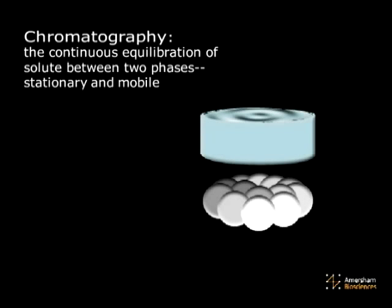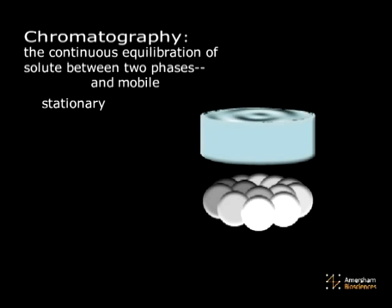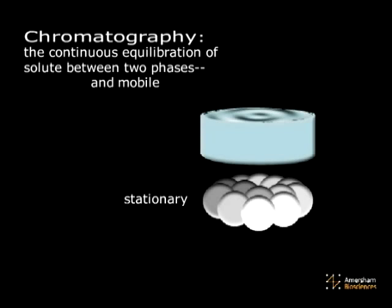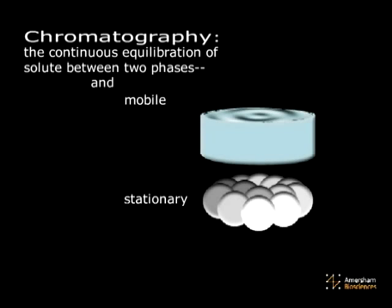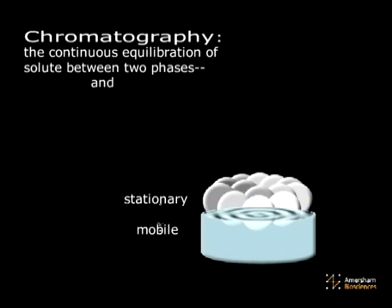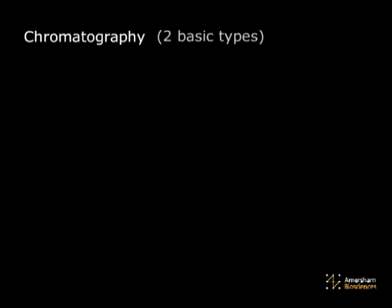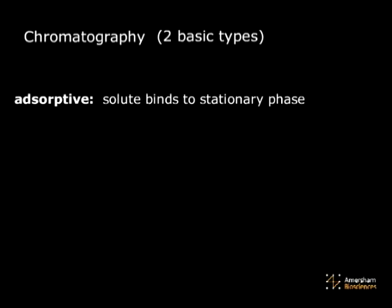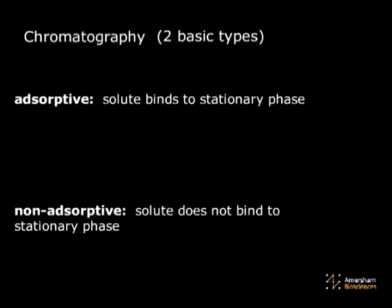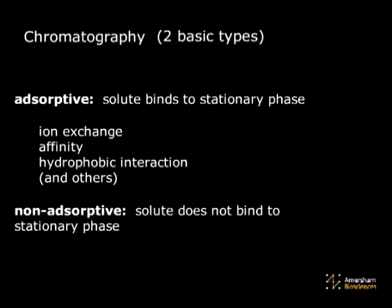Chromatography is the continuous equilibration of solute between two phases: the stationary phase and the mobile phase. In general, there are two types of chromatography: adsorptive chromatography, in which the solute binds to the stationary phase, and non-adsorptive chromatography, in which the solute does not bind to the stationary phase. Ion exchange, affinity, and hydrophobic interaction are all examples of adsorptive chromatography.